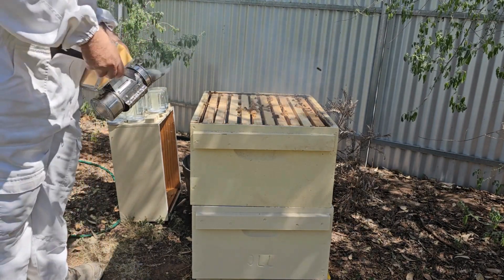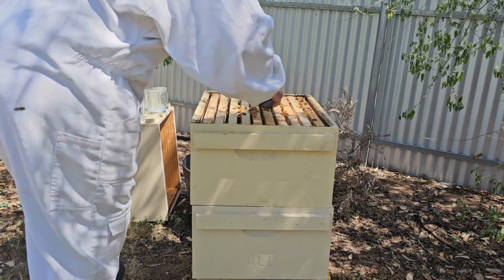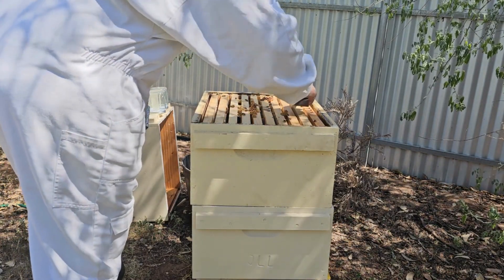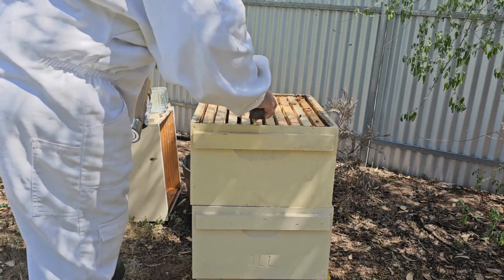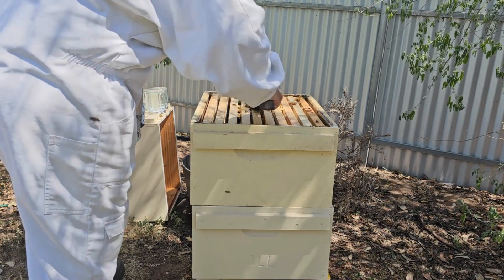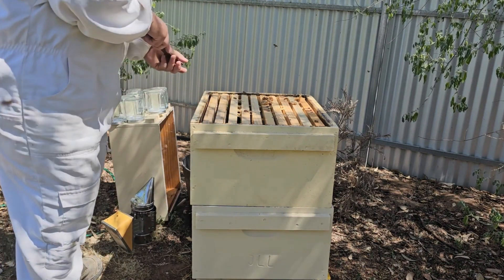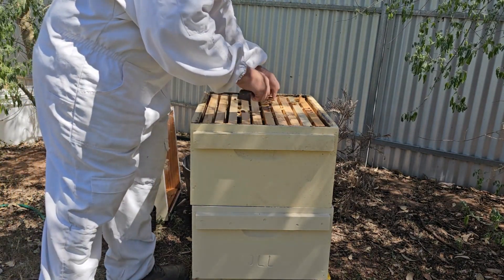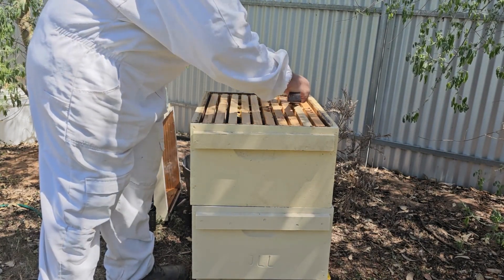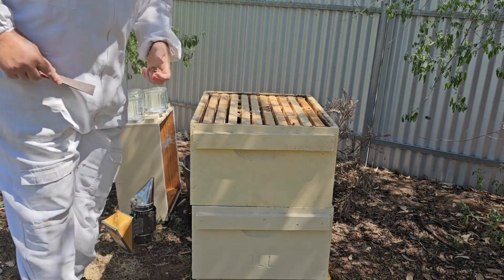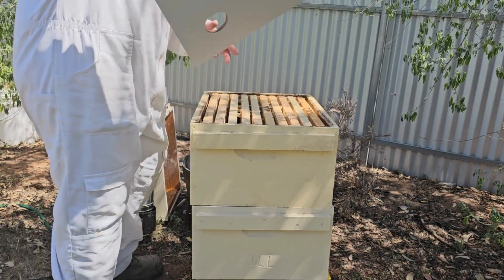Okay, hive tool. All right, so we'll just open them up, smoke them down. Obviously we'll need to take some of this comb off. We're going to put the board straight on top. Not too many flying up, which is good. We don't want them up in the top because they won't be able to get out.